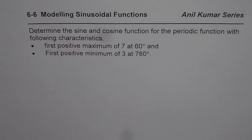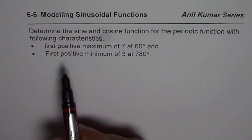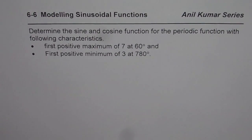I am Anil Kumar and in this video, Modeling Sinusoidal Functions, I will give you a few tips which can help you save time and arrive at a trigonometric equation very efficiently. Here is an excellent question: determine the sine and cosine function for the periodic function with the following characteristics — first positive maximum of 7 at 60 degrees and first positive minimum of 3 at 780 degrees.